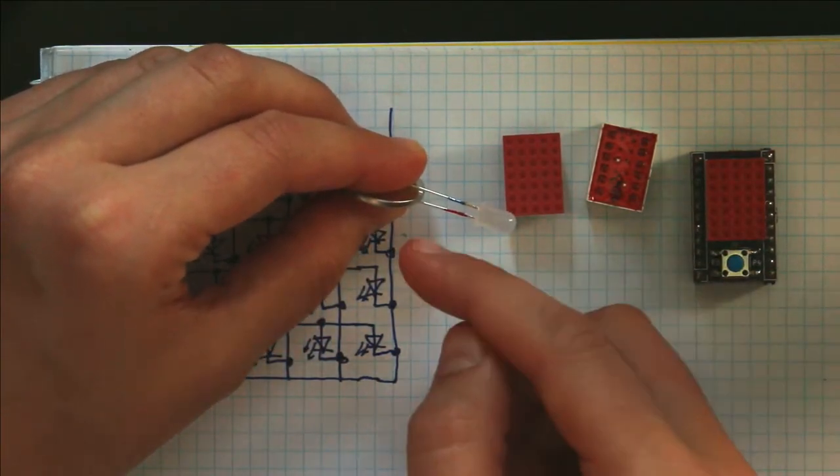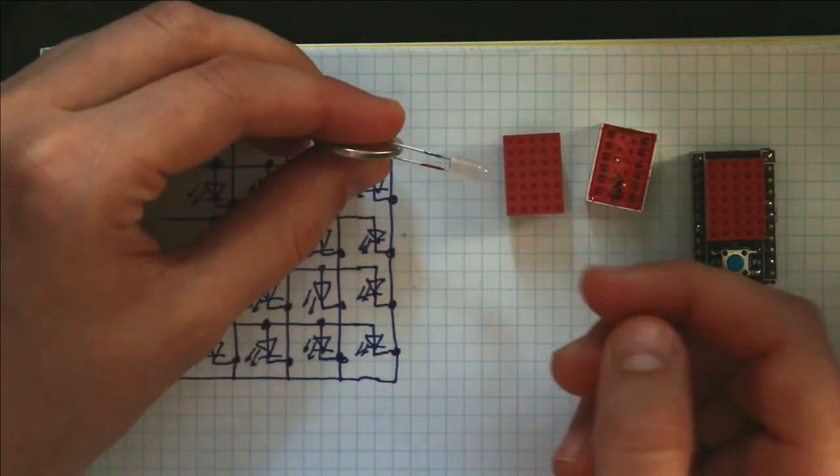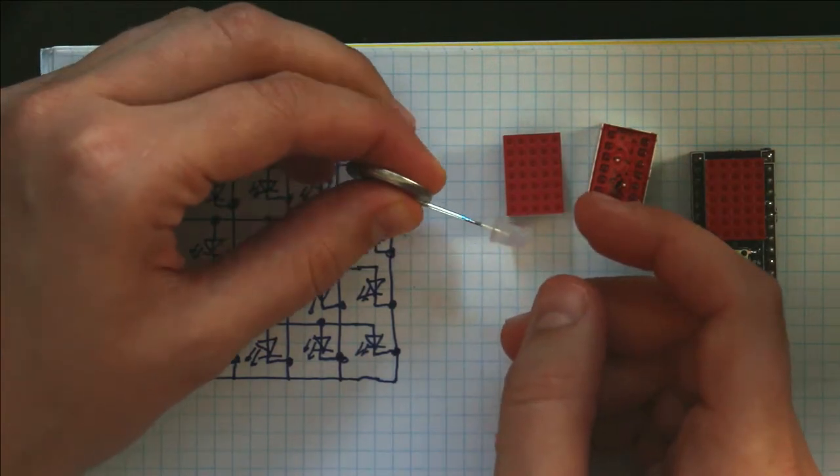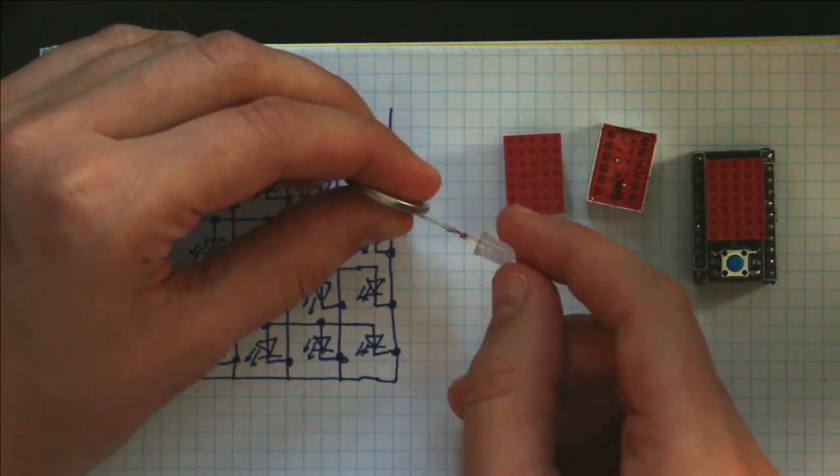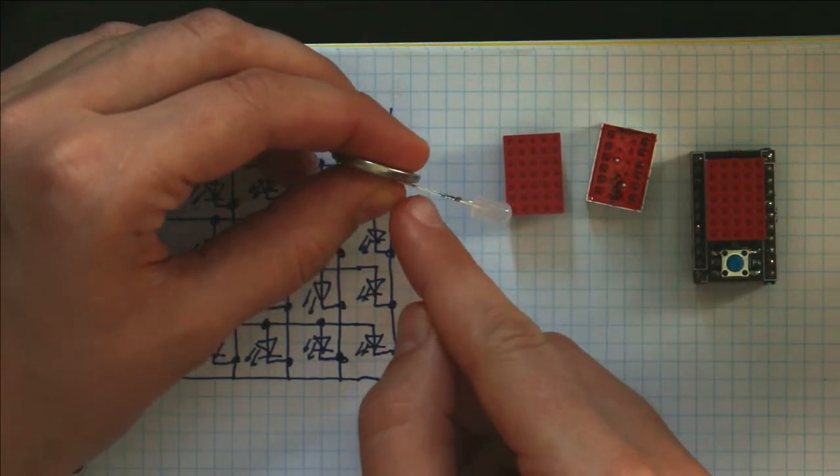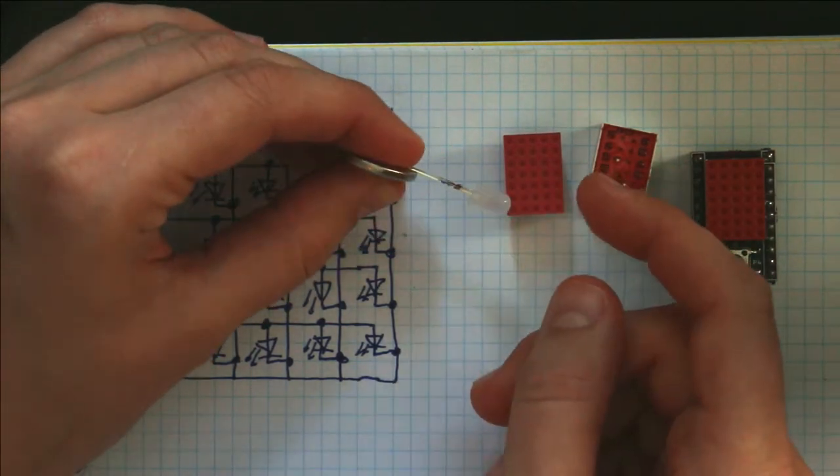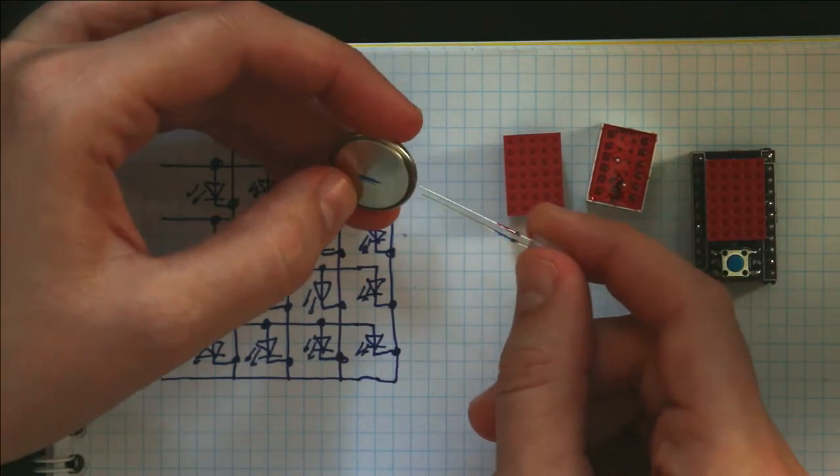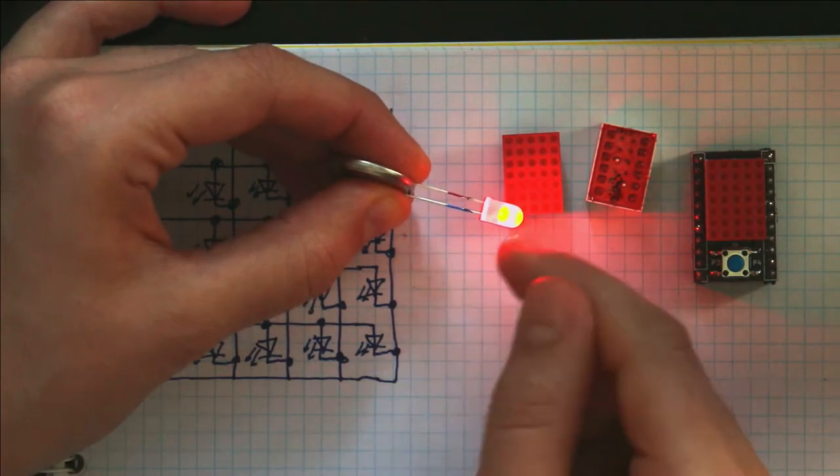So if we connect it backward, nothing's happening because current is trying to flow in the wrong direction and it won't allow it. If we connect them both to the positive side, nothing happens, or the negative side, nothing happens because there's no current flowing. And the same is true of the positive side. But if we connect the negative side to the negative side of the LED, then we see that it turns on because current is allowed to flow in that direction.